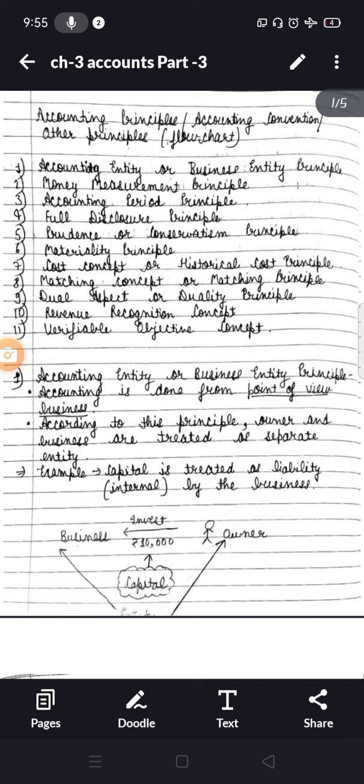This concept requires that accounting transactions should be recorded in an objective manner and should be free from personal biases of the accountant. This is possible if transactions are supported by documentary evidences and vouchers.